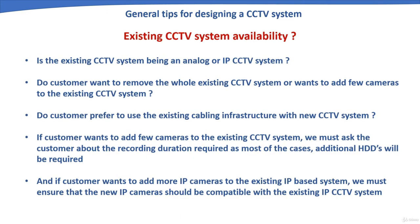Existing CCTV system availability: if a customer already has a CCTV system, clarify whether it is analog or IP — this helps determine what new system type to select. Determine whether the customer wants to remove the whole existing system or just add cameras. Also check whether the customer wants to reuse existing cabling infrastructure, and ensure it meets new system requirements and is in good condition.